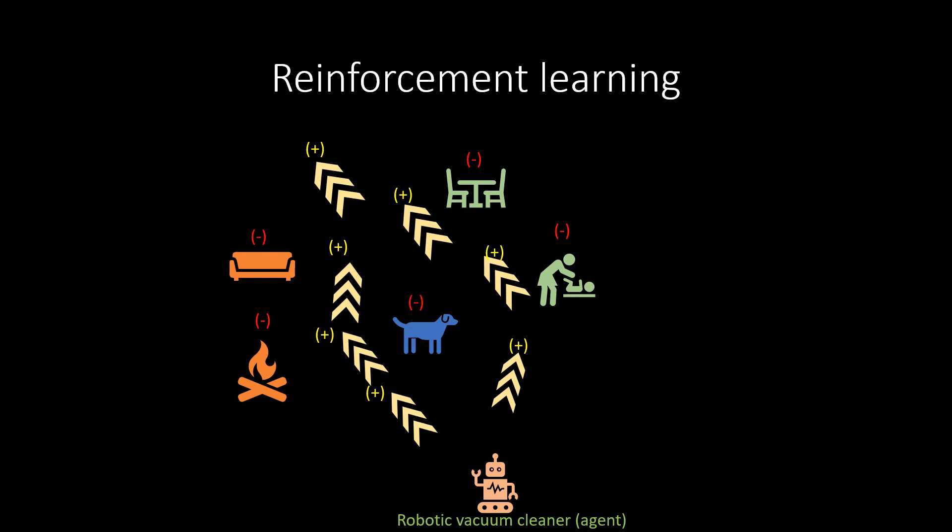Robotic vacuum cleaners and video games are best day-to-day examples of this type of learning. The main challenge with this type of learning is that it's not as efficient as supervised learning. The learning process becomes even more challenging when the real environment is complex. In the illustration, we can see how a robotic vacuum cleaner finds its way, avoiding negative rewards and choosing positive rewards.